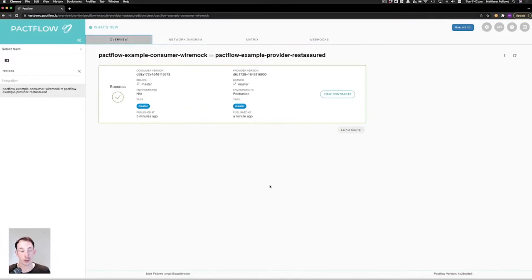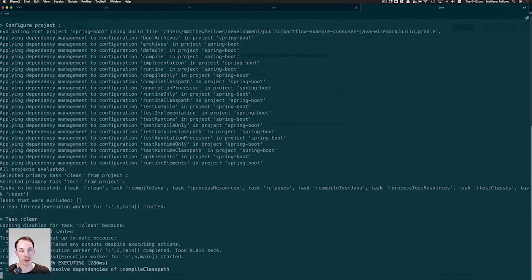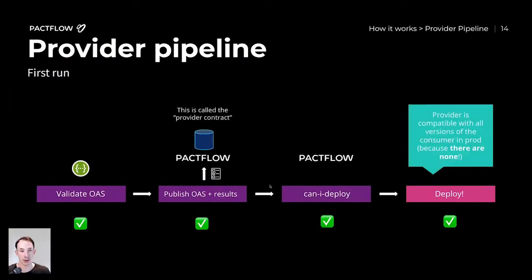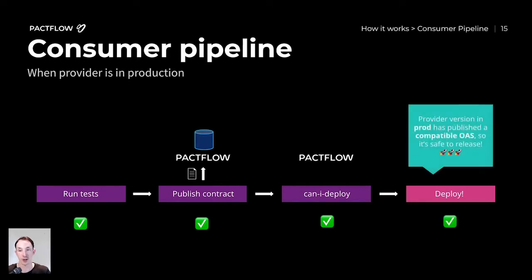Now that our provider has been deployed to production, we can go back to our consumer code base and simply rerun this test. Now that the provider is in production, we know it's going to be safe to make this change. We're going to repeat the pipeline again on the consumer side — run the tests, publish the contract, run Can I Deploy — except this time it should pass because the provider is in production and, more importantly, that provider satisfies the needs of this consumer. So we can deploy the consumer because it's safe.